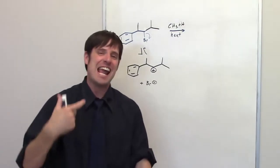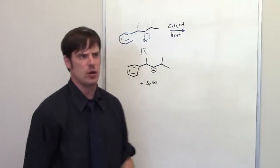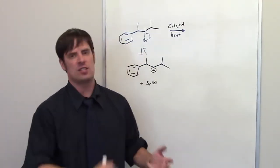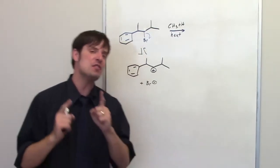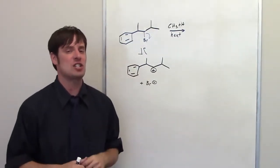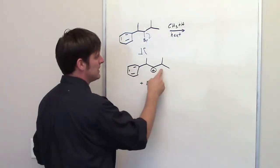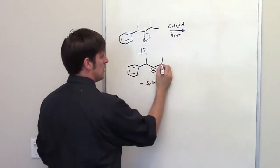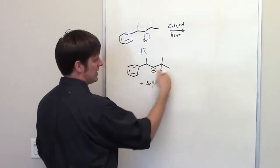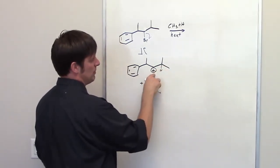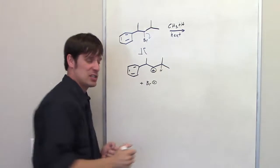Now, carbocations are very interesting because they can do rearrangements, either hydride shifts, ring shifts, or methyl shifts, if doing so increases the stability of the carbocation. I've got a secondary carbocation. I could potentially have a hydride shift occur by having this hydrogen over here move in there and then it would move the positive charge over to that carbon, that would be tertiary carbocation.